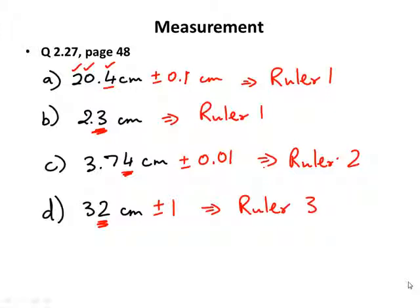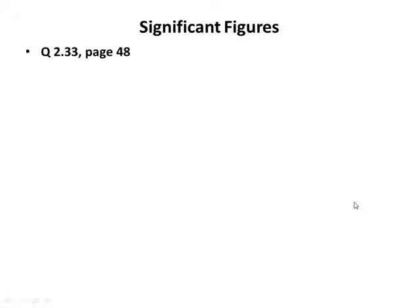Hold on — for answer A, the correct answer should be ruler 4, because you're measuring 20.4 centimeters. So that's measurements. Let's talk about significant figures. Please remember: all non-zero digits are always significant; all leading zeros are never significant; confined zeros are always significant; and trailing zeros are significant only if there is a decimal point in the number.